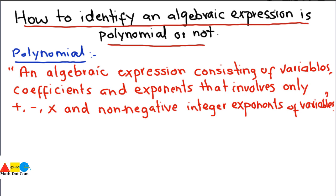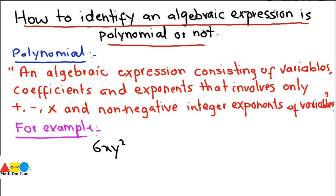A polynomial is basically an algebraic expression that consists of variables, coefficients, and exponents that are non-negative. Exponents should be non-negative integers and the operations between them should be addition, subtraction, or multiplication. Let's take an example: 6xy² + 3x − 4.